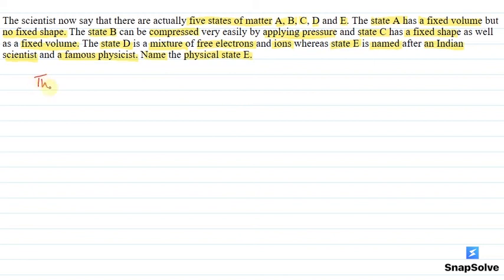So we know that the state E is called, what is it called? The Indian scientist's name was Satyendranath Bose and who is the famous physicist? He is Albert Einstein. So, what do we call state E? It is called as Bose Einstein Condensate.